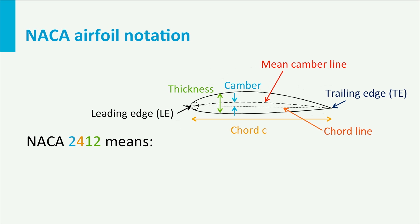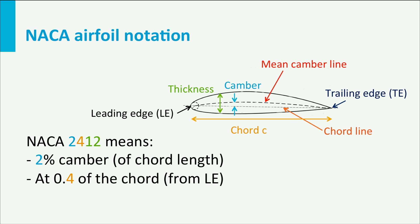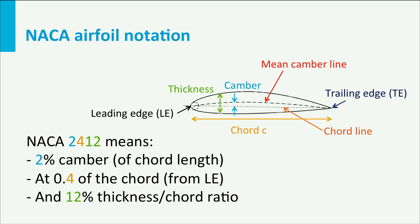As an example, NACA 2412: the first digit '2' means that the profile has a camber of 2 percent, so it has a maximum distance of 2 percent times the chord length between the camber and chord line. The second digit '4' indicates the position of that camber with reference to the leading edge — 0.4 times, or 40 percent, of the chord length. The last two digits '12' indicate the thickness of the profile, in this case 12 percent of the chord length.